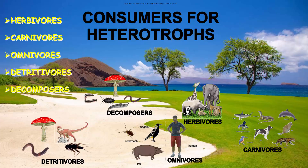Now we are going to see about consumers or heterotrophs. It has herbivores, carnivores, omnivores, detritivores, and decomposers. Here you can see carnivores, herbivores, omnivores, decomposers and heterotrophs.